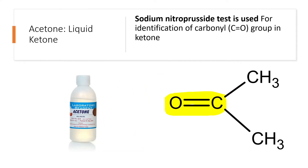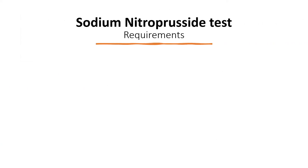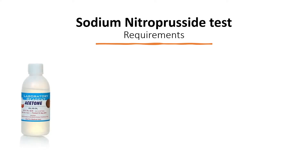Let's consider acetone. It is a liquid ketone, so contains carbonyl group. For identification of carbonyl group in ketone, we can use sodium nitroprusside test. For performing this test, you will require the organic substance to be tested.